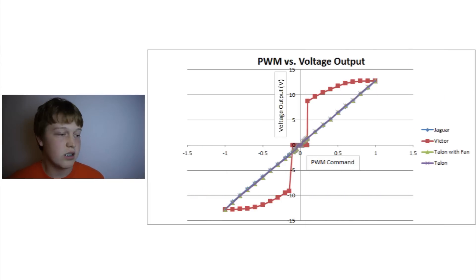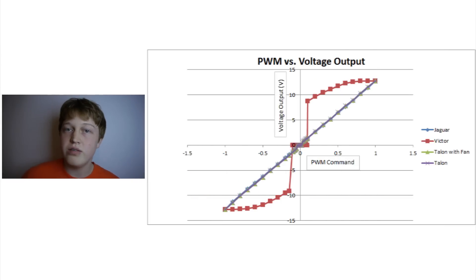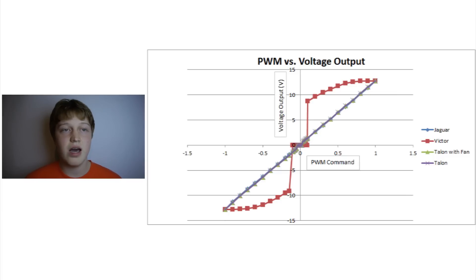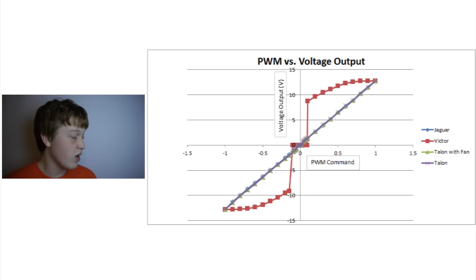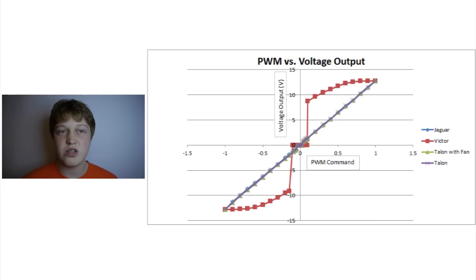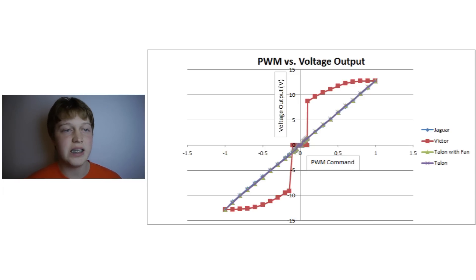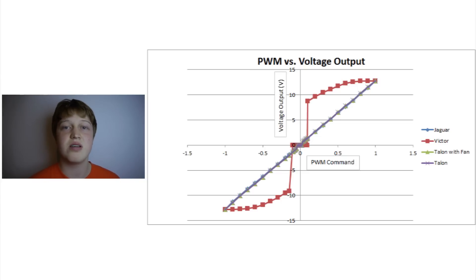If you look over here, you can see a graph of the different motor controllers that we use in FRC. As you can see, the Victor is not very linear at all, whereas the other motor controllers are quite linear. Thank you to the FightingPi, Team 1718, for this graph.